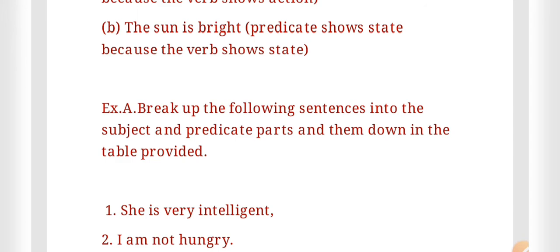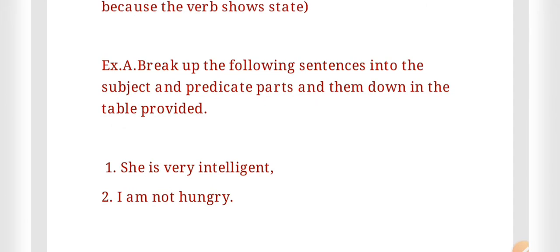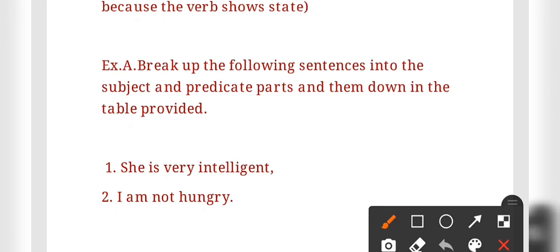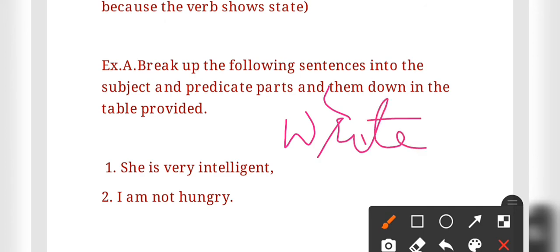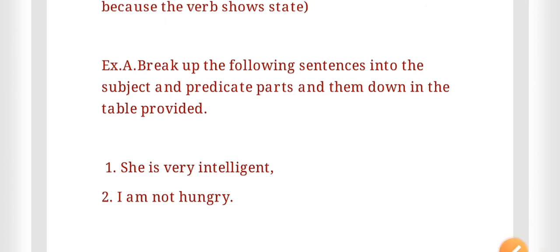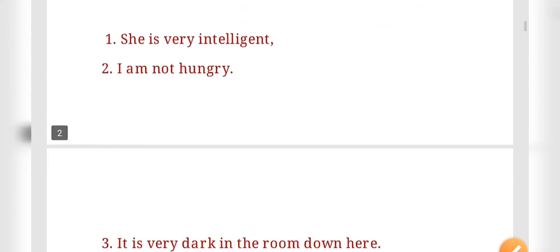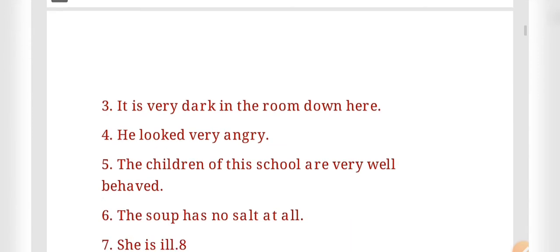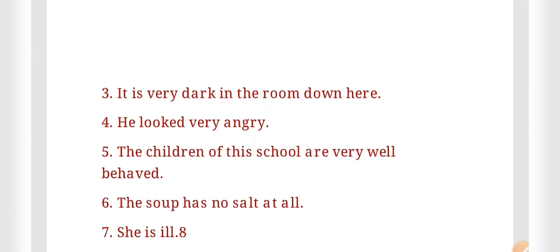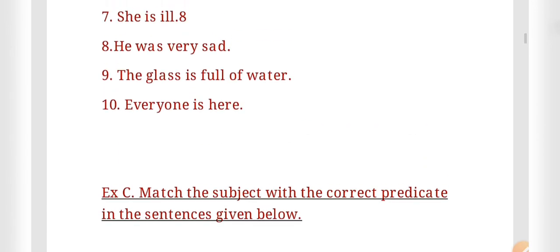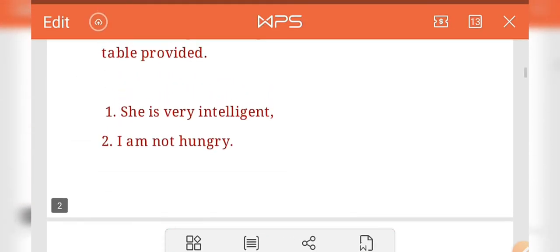Exercise A is on page number 74 of your book. It says: break up the following sentences into subject and predicate parts and write them down in the provided table. The first sentence is 'She is very intelligent.' The second is 'I am not hungry.' The third is 'It is very dark in the room.'